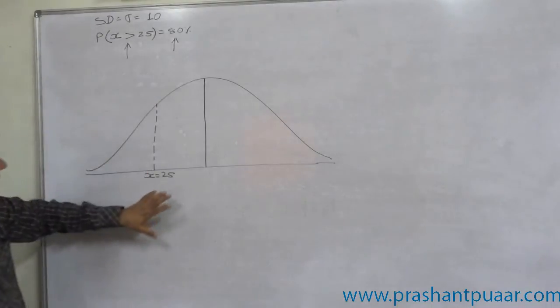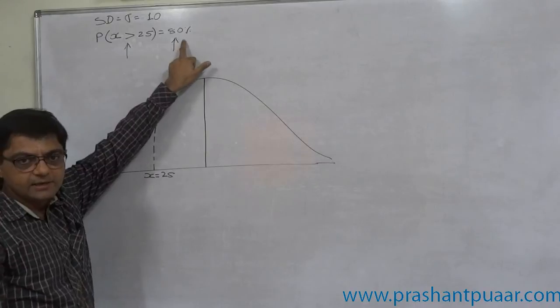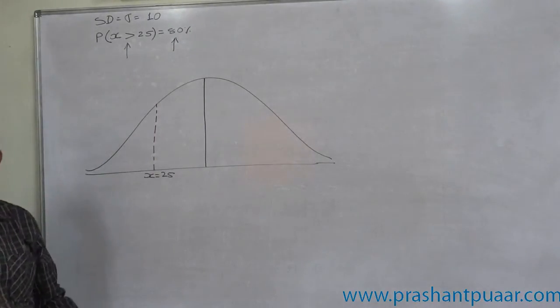So we can conclude that: if the sign is greater than and probability is greater than 0.5, then the value of x must be on left-hand side area.